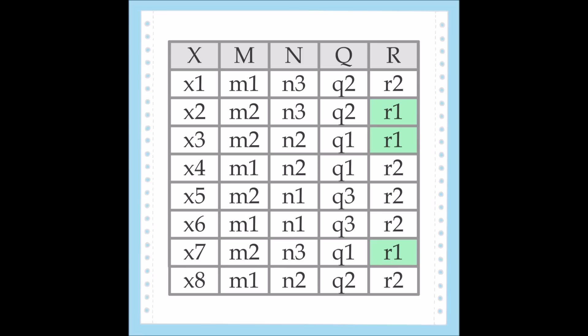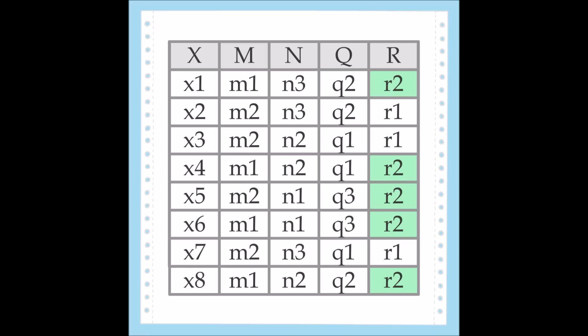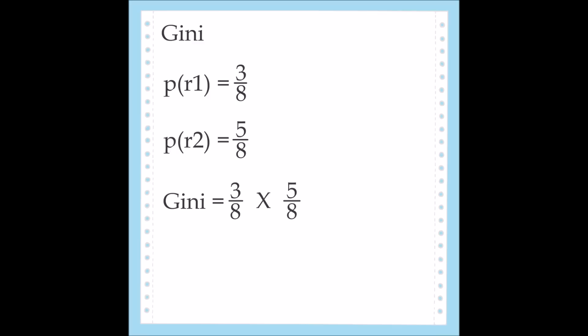For example, value R1 appears in 3 out of 8 tuples, so its probability is 3 out of 8. Next, we calculate the probability of value R2. R2 appears more often, in 5 out of 8 tuples. After calculating the probabilities for each different value of the decision feature, multiply them to determine the Gini value for the system. In this system, the value is 15 over 64, or 0.234375.